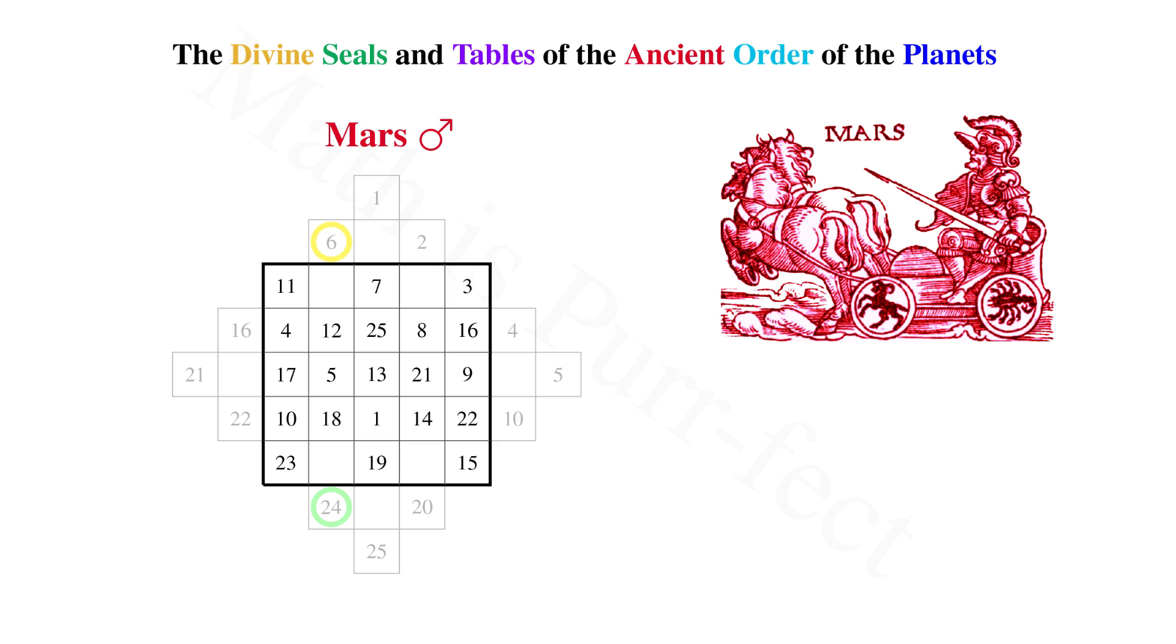The two remaining columns have their numbers inserted in a similar fashion. 6 goes down to the bottom and 24 to the top, whereas 2 goes down to the bottom and 20 to the top. What we have now is our completed magic square for Mars.